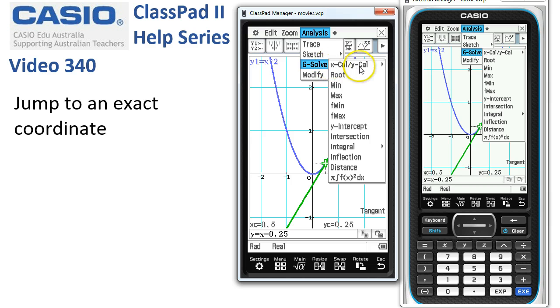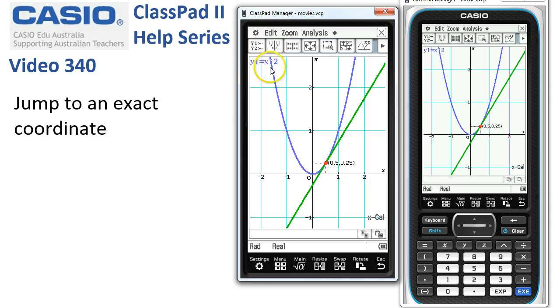Now, what we've just been doing is using the y calc, but if we choose the x calc, it wants to know a y. Oh, we've got two functions going, so ClassPad's alerted us to that fact—it's flashing. I want to go on the parabola.